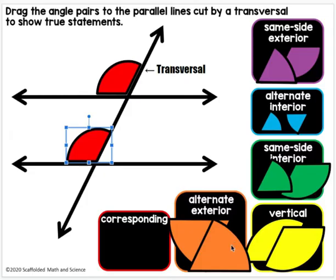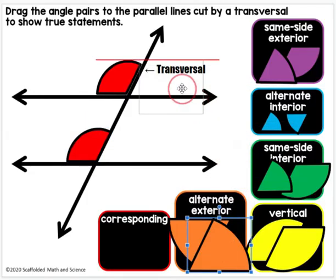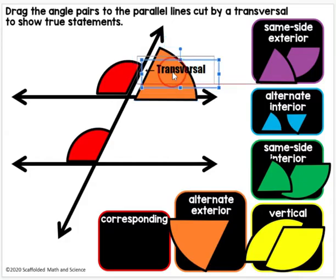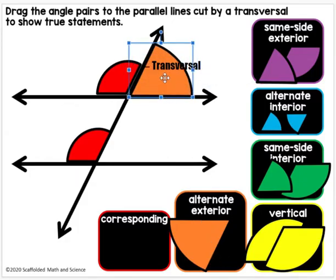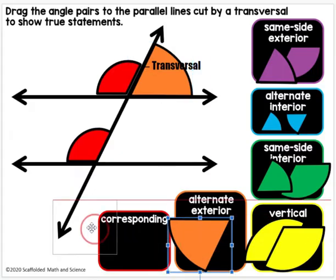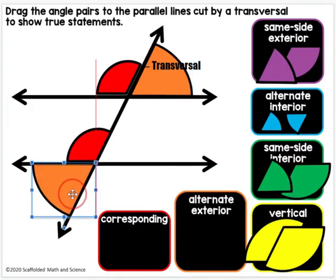The next is alternate exterior angles. So they'll be on either side of the transversal. That's what alternate means. So one will be on this side, and one will be on this side of the transversal. But they'll be exterior, so they'll be outside of the parallel lines. So here we can see it's above the parallel lines, and here what's below the parallel lines.